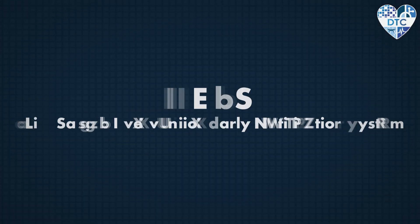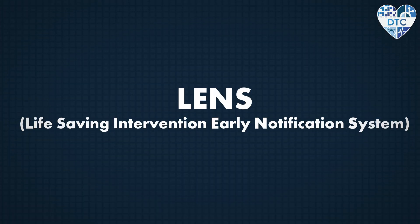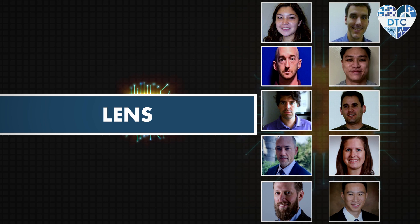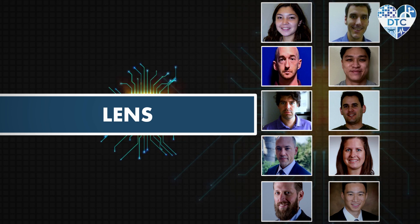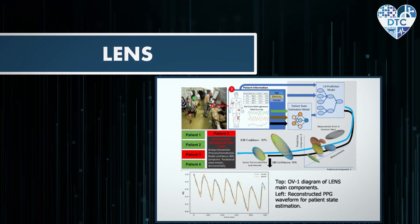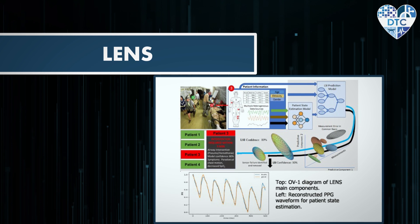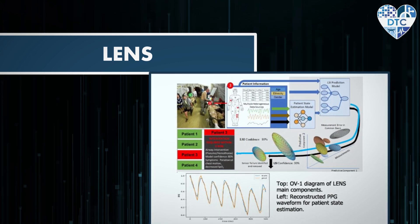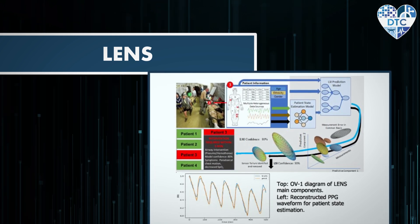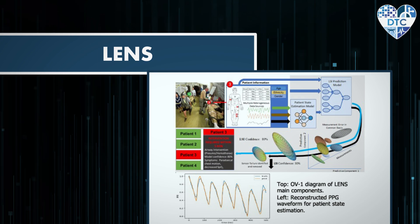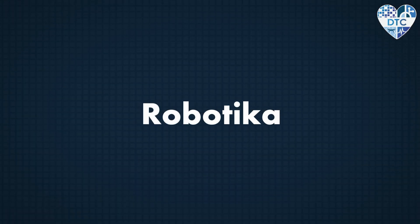Team Lens — Life-saving Intervention Early Notification System — uses statistical sensor modeling, AI/ML algorithms, and medical experience for early detection of LSI signatures and secondary triage support. The Phase 2 plan involves joining models from different trauma centers for improved generalizability.